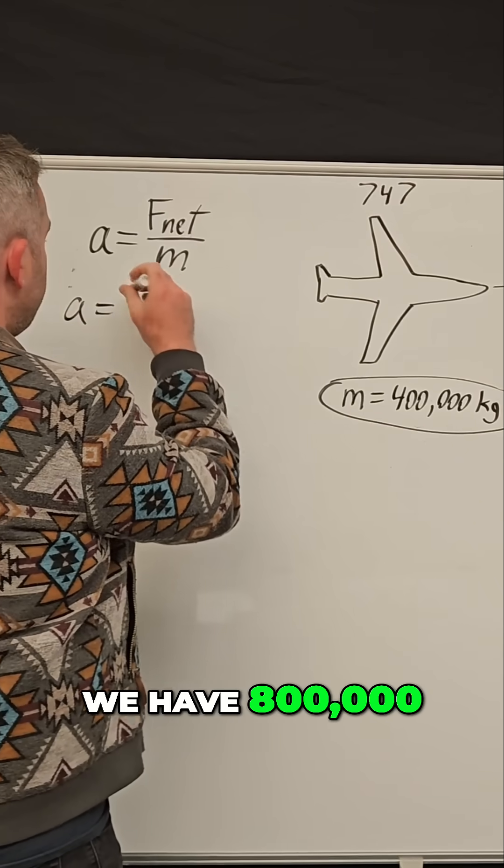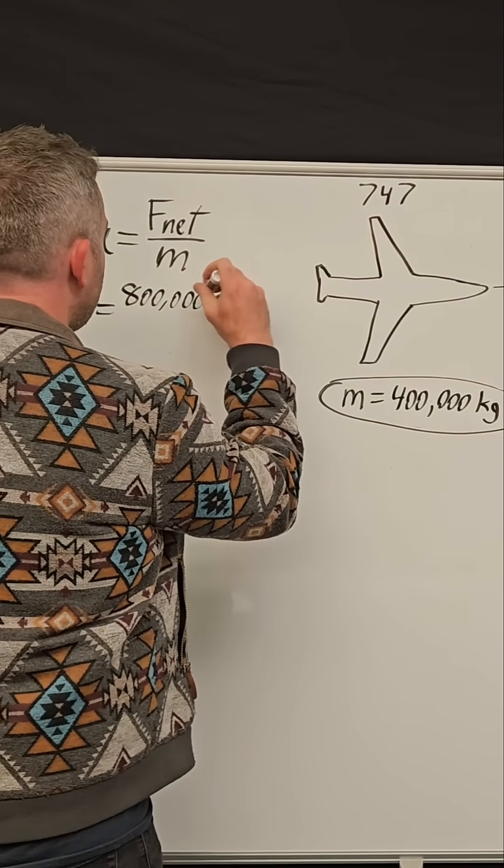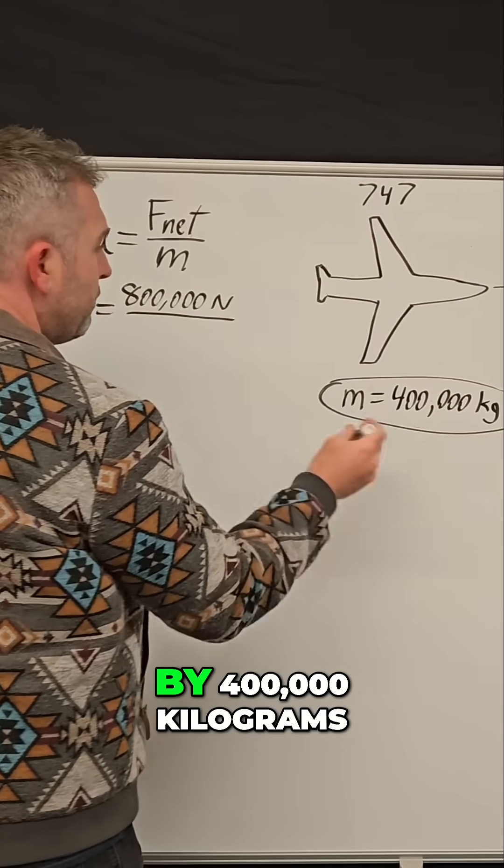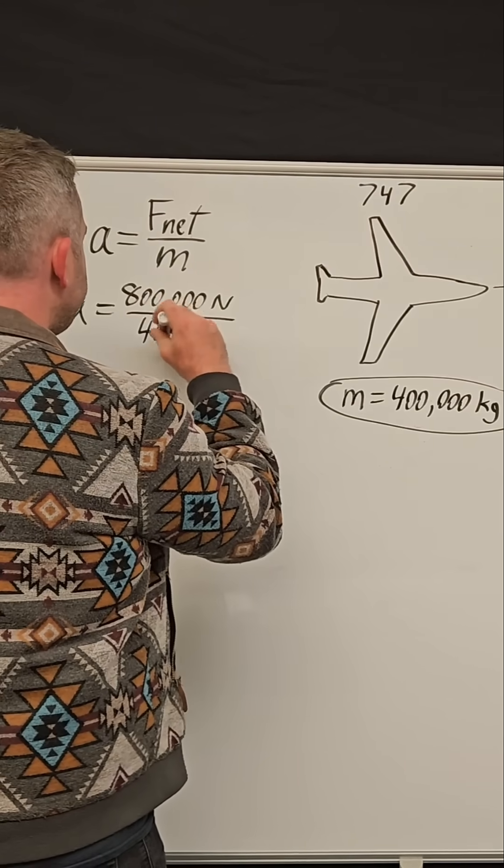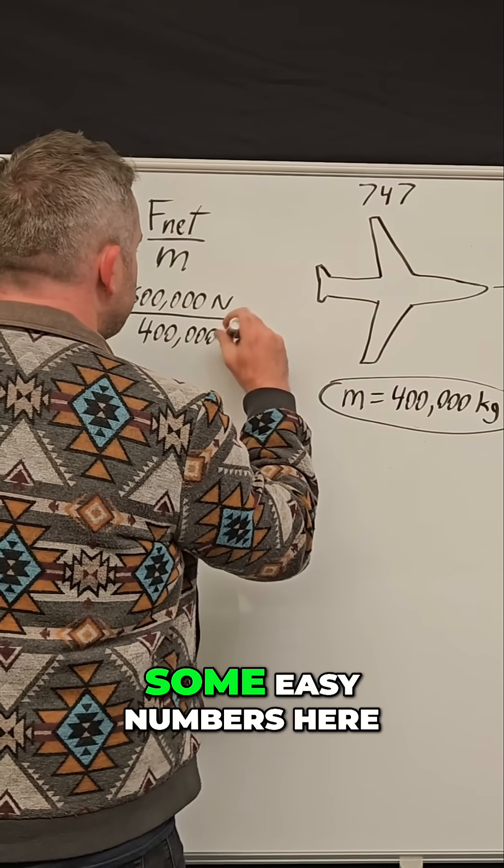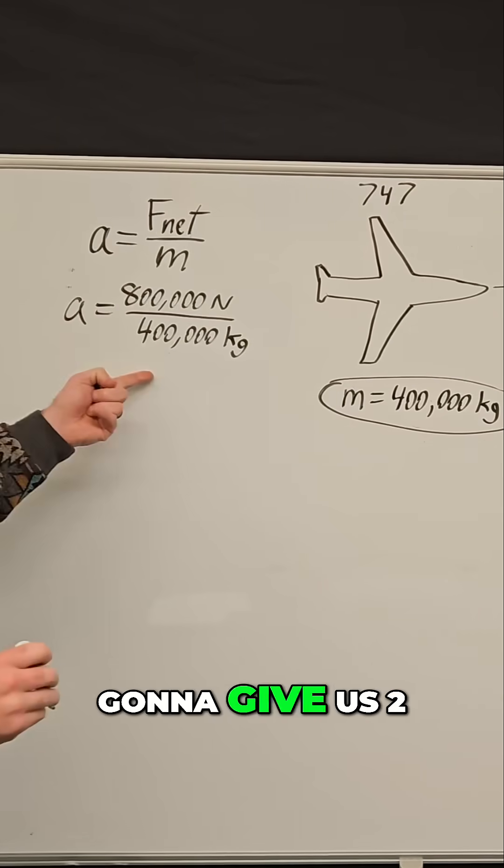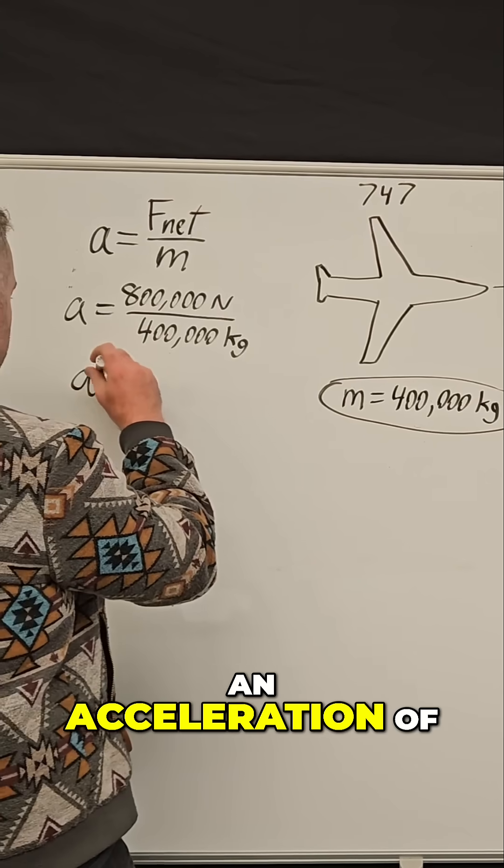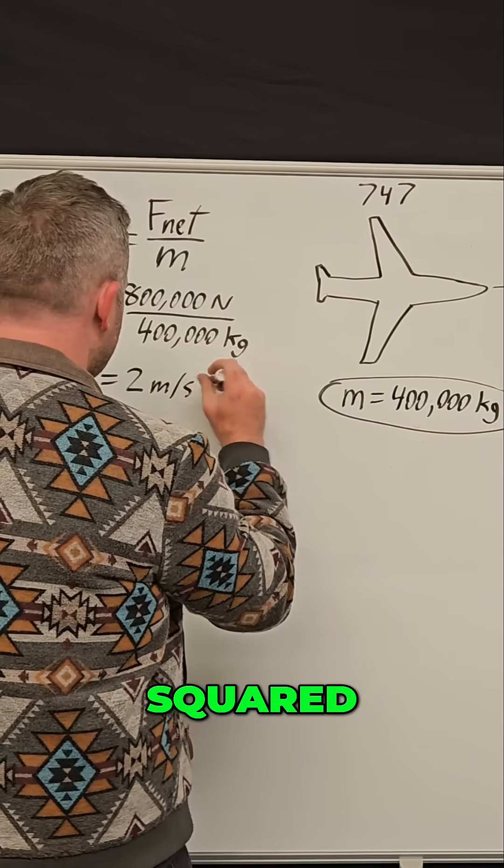Remember we have 800,000 Newtons divided by 400,000 kilograms. And I have some easy numbers here, so this is just gonna give us two. So we get an acceleration of two meters per second squared.